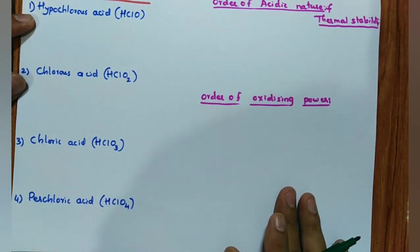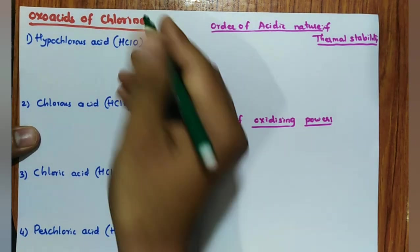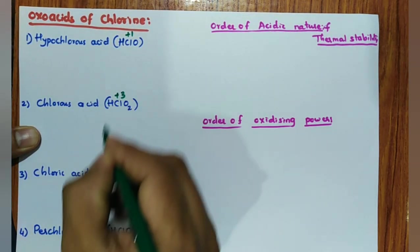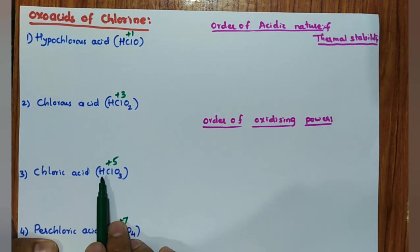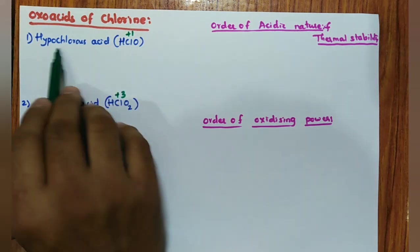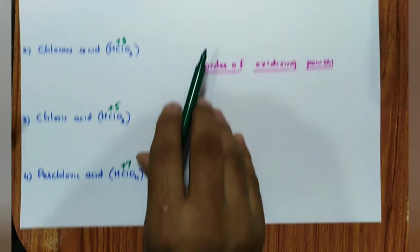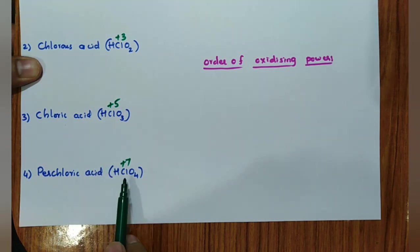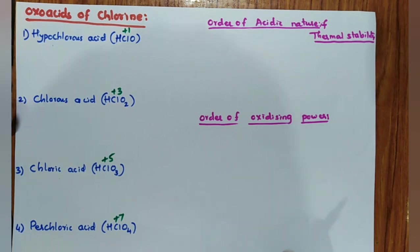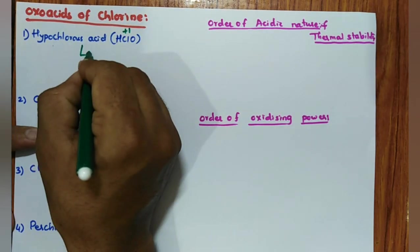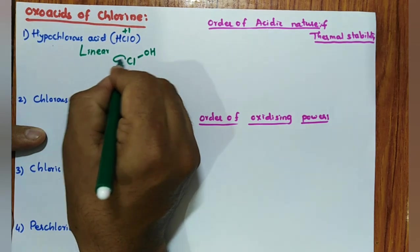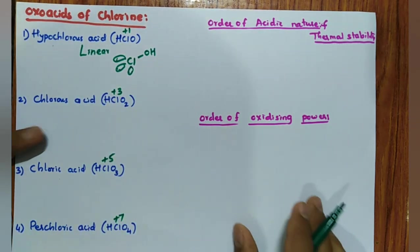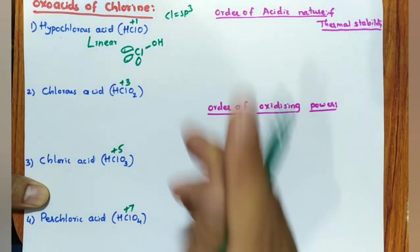Oxoacids of chlorine: HClO (hypochlorous acid) — hypo, oxidation state +1. HClO₂ (chlorous acid) — +3. HClO₃ (chloric acid, IC acid) — +5. HClO₄ (perchloric acid) — per means more than IC, +7. Hypo means less than the S-acid; per means more than the IC acid. Cl is SP3 hybridized in all cases. HClO has a linear structure — Cl–O–H with three lone pairs on Cl.